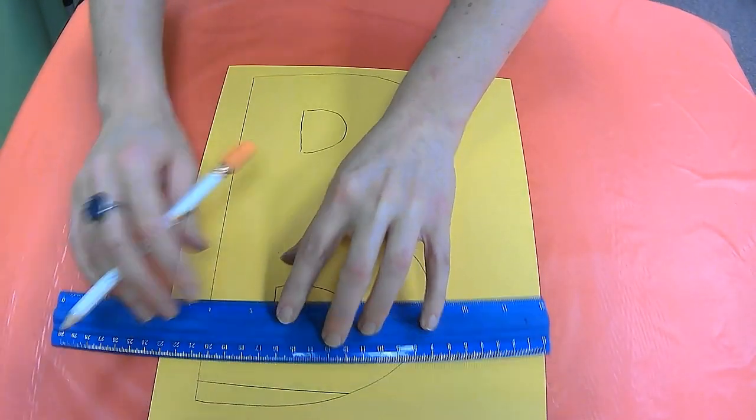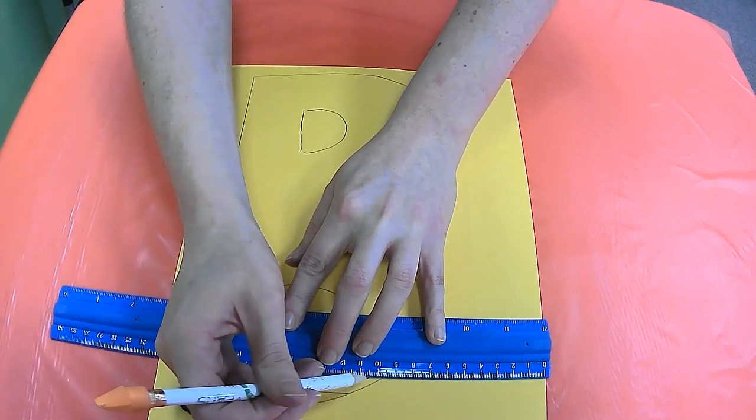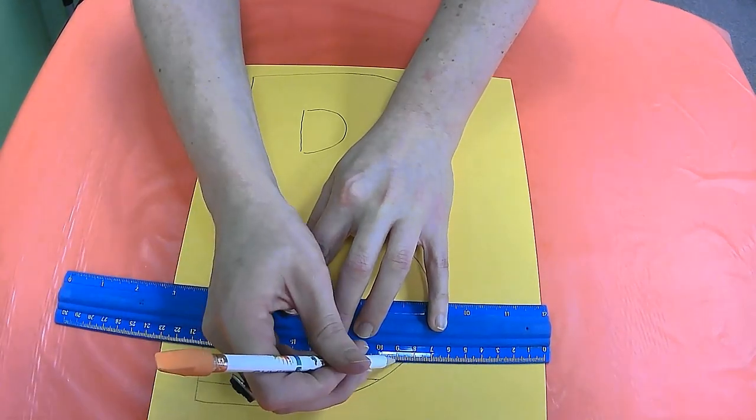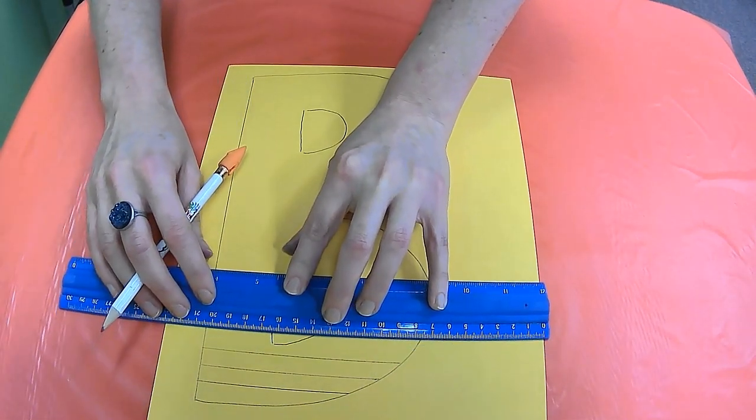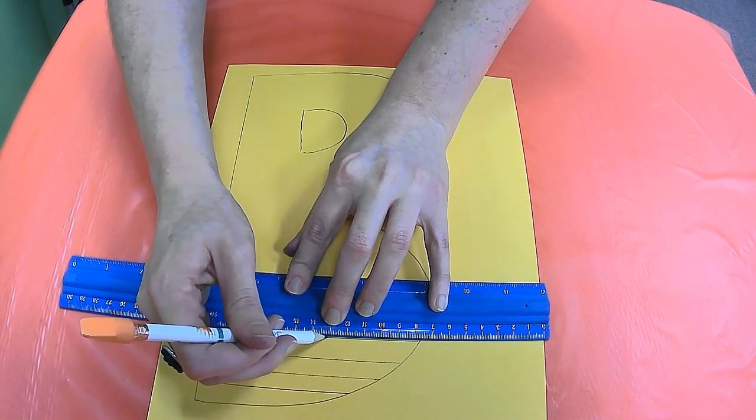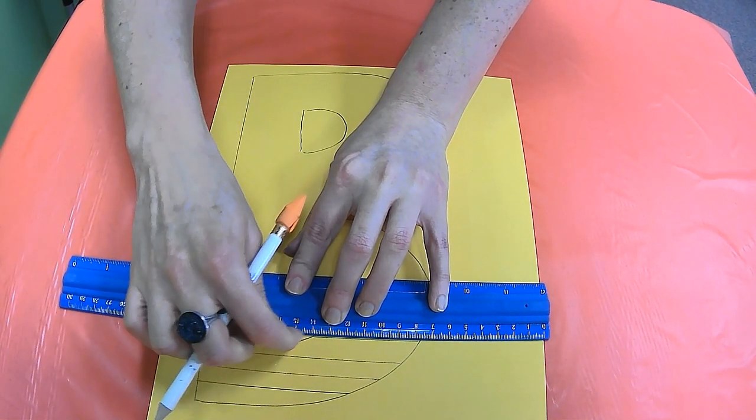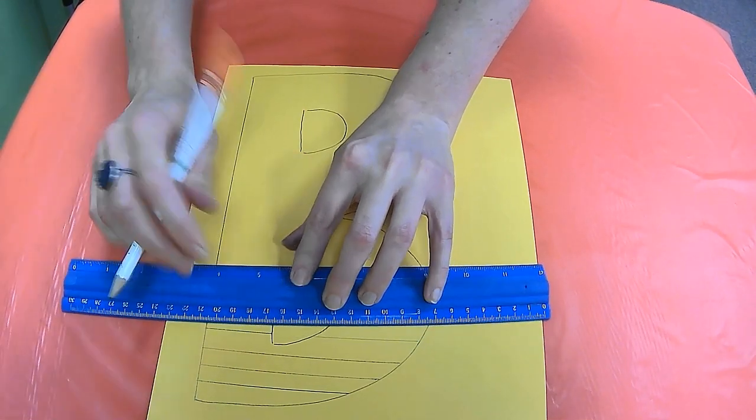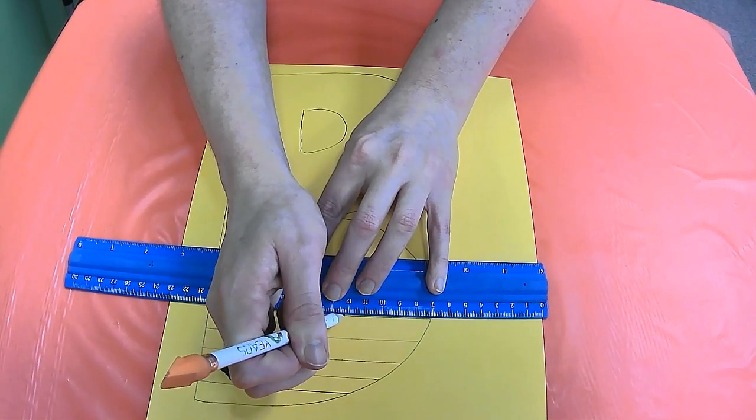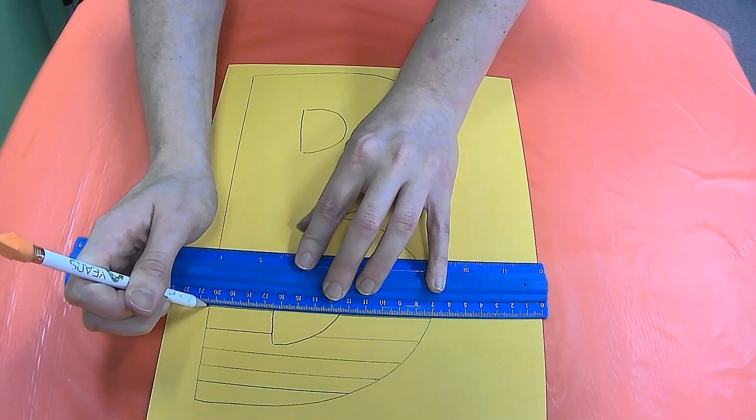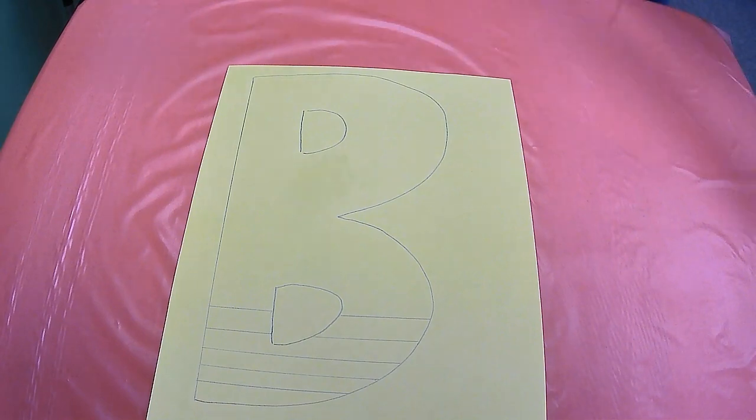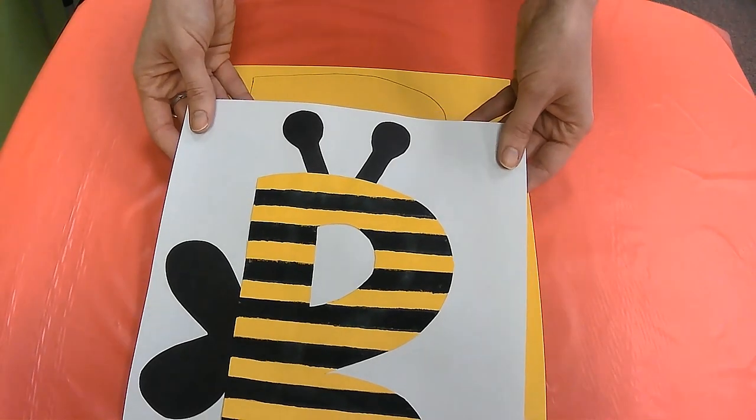You can space out your lines however you would like. I'm not measuring to make sure that the lines are the same distance apart, but you're more than welcome to do so. Just keep moving up the letter B and stop when you reach the holes in the middle and continue on the other side. So you're just going to keep doing this all the way up your letter B until your lines look something like this.